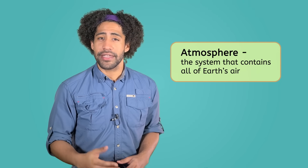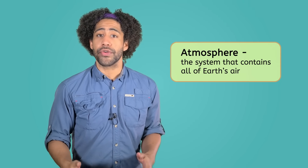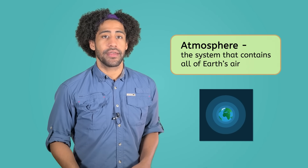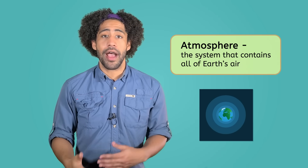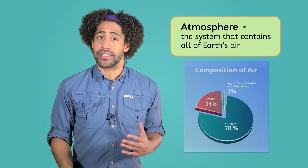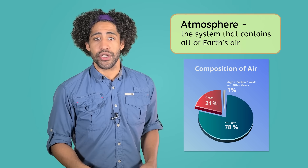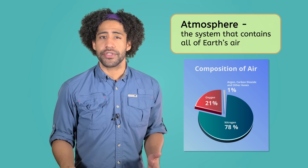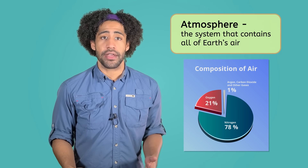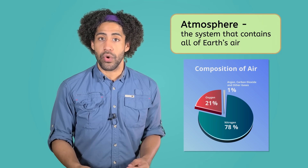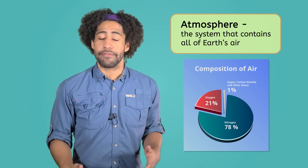In our lesson on Earth's spheres, we learned that the atmosphere is a system that contains all of Earth's air, or the gases that surround our planet. Our atmosphere is made up of a combination of gases, including 78% nitrogen, 21% oxygen, and trace amounts of others such as carbon dioxide and water vapor. These gases play an important role in supporting life on our planet.